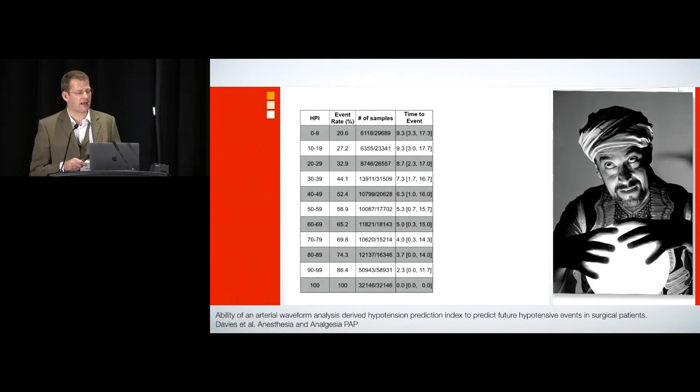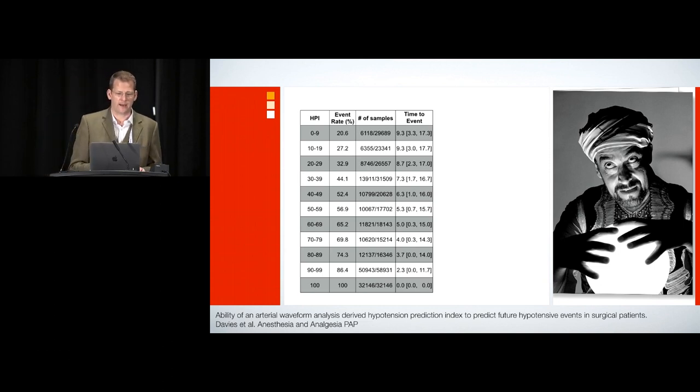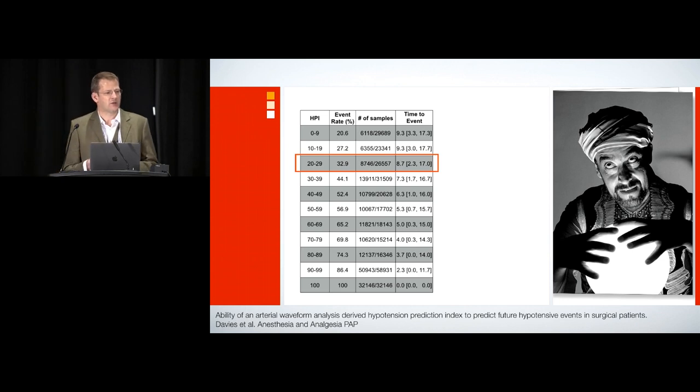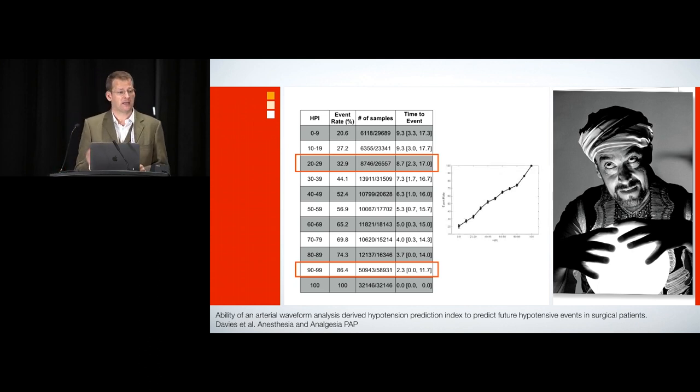And so this is data that Thomas and I pulled together last year. Thomas is a professor of anesthesia at Groningen in the Netherlands, although he's naturally German and not Dutch, so we like him better. But this is HPI here. So if HPI is low, it was in the 20s to 29s, the event rates and the event is hypotension. It's only about 30%. On the face of it, it sounds bad. But as you approach hypotension, that number will go up. And the average time is around about eight minutes or so. Whereas HPI is raised, almost everyone will become hypotensive. And the time to hypotension is quite short. The duration has come down.